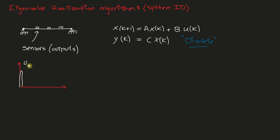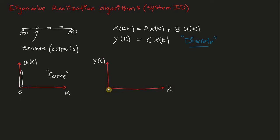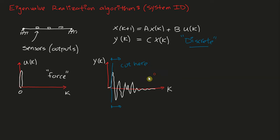So we have an input force that's going to look like an impulse — the impulse takes place at time zero and it's going to be zeros at all other times. Similarly, my output is going to have a free response: there's going to be that initial jolt, and then my dynamical system has natural damping so it will die off. The first thing I want to do is cut the forced section of the response and only keep the free section, which is what we generally call the impulse response.